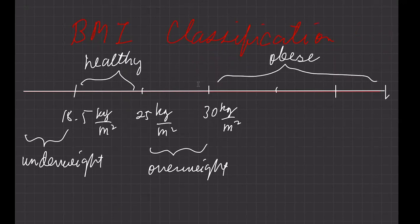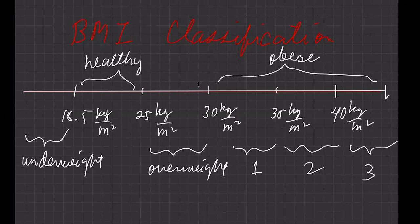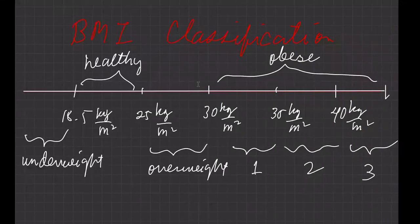A BMI of 30 and higher is considered obese, with sub-classifications: Class 1 at 30–35, Class 2 at 35–40, and Class 3 (severe obesity) at 40 and above. You can try computing your own BMI — determine your weight and height, convert to meters, and apply the formula: mass divided by height squared, with the unit being kilograms per meter squared. That's all for today — enjoy learning, bye!